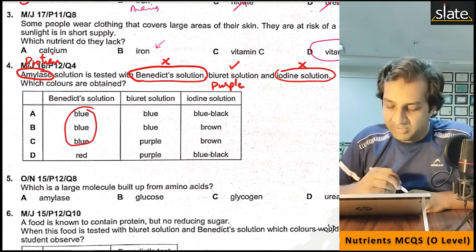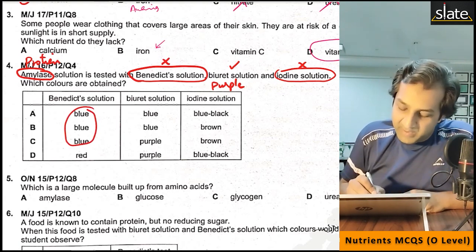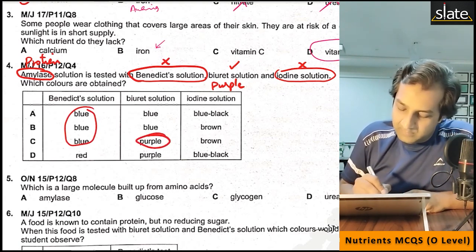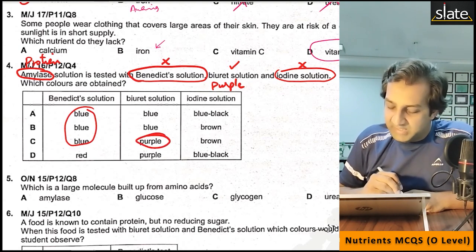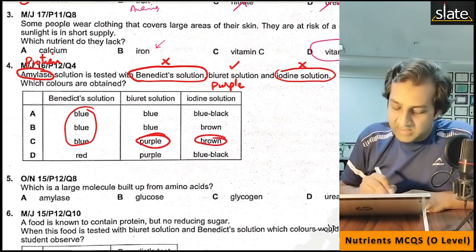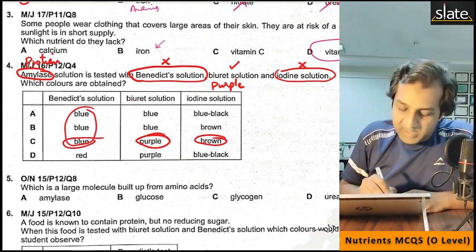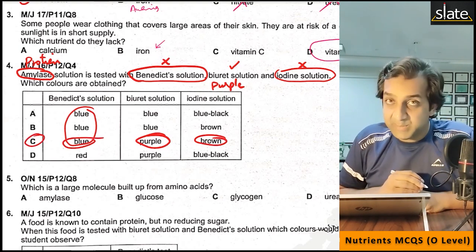Because there is no sugar, the Benedict solution result will be negative — it stays blue. The iodine solution will be brown. So option C is correct.